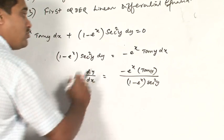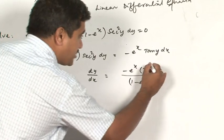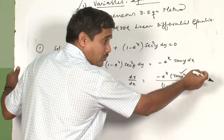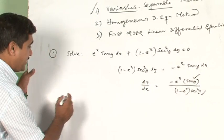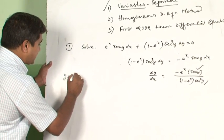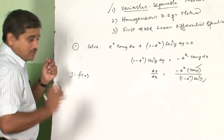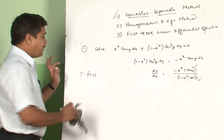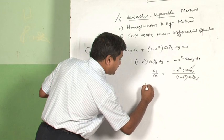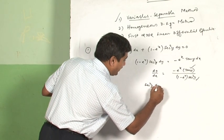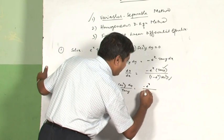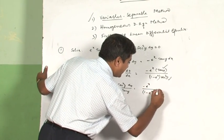Put the equation in standard form: dy/dx = −e^x tan(y) / (1 − e^x). This is the standard form. Now separate the variables: y terms go to the left side and x terms go to the right side, because every function is y = f(x). So we get sec²(y) dy / tan(y) = −e^x dx / (1 − e^x).